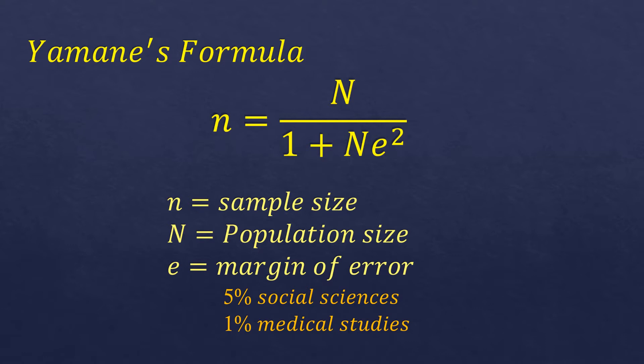So basically, we know only the population size of our research, of our target population, and so we usually use the Sloven's formula or the Yamane's formula. So let me show you how to compute using this formula.